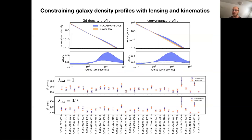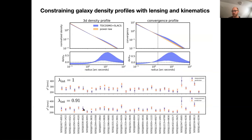When we combine all of those together we get these results in terms of the density profile — not talking about H0 yet. We infer what the density profiles are given our data set. For lambda_int equals 1, that is the previous power-law assumption, while lambda_int equals 0.91 is the best-fit value of our inference. You can see the slight difference in the radial slope of these profiles.